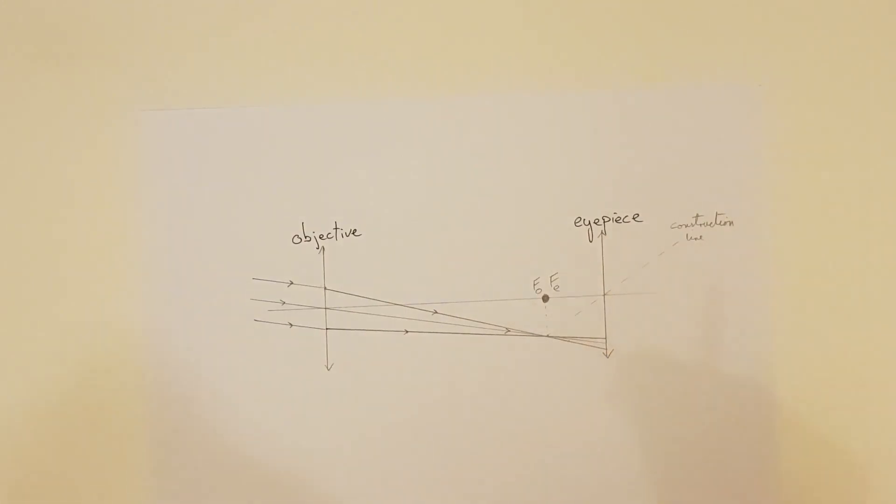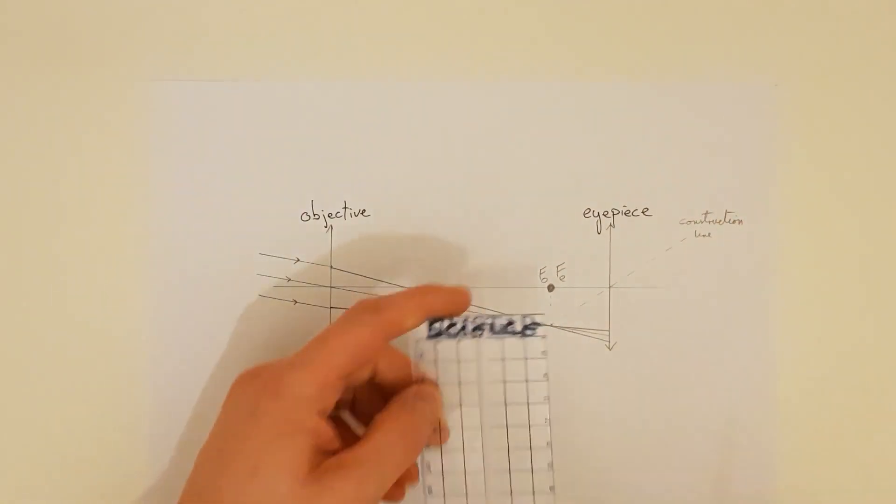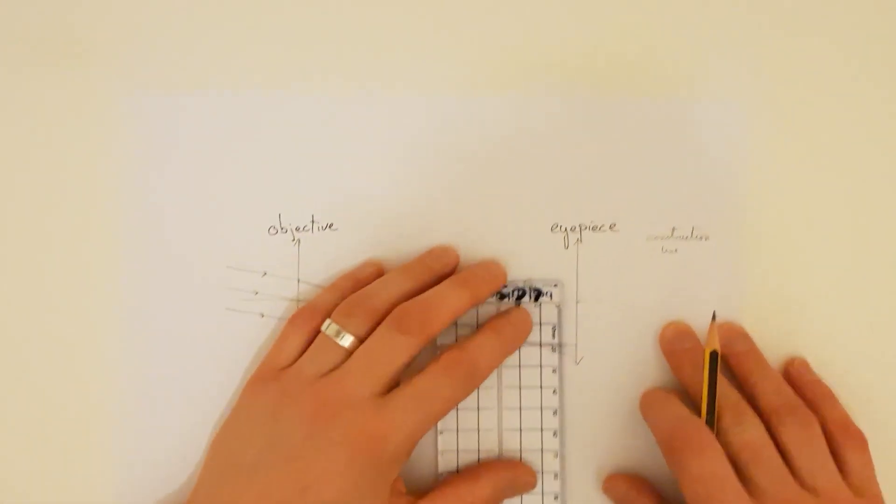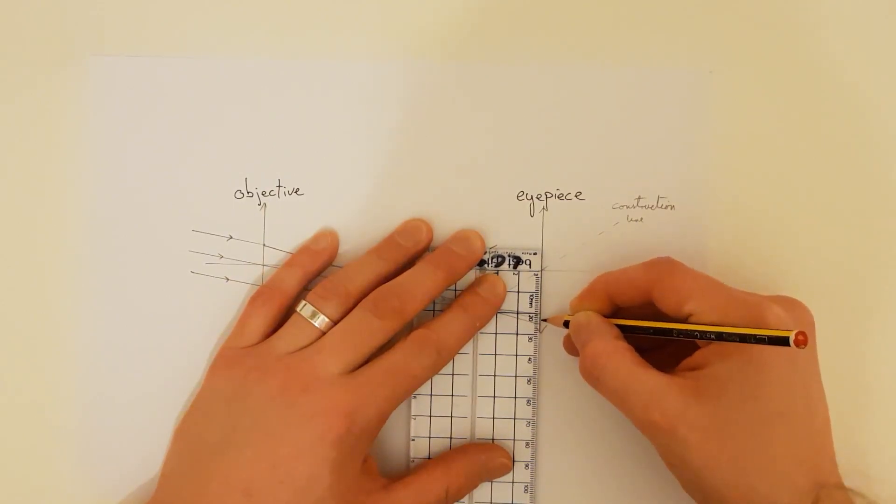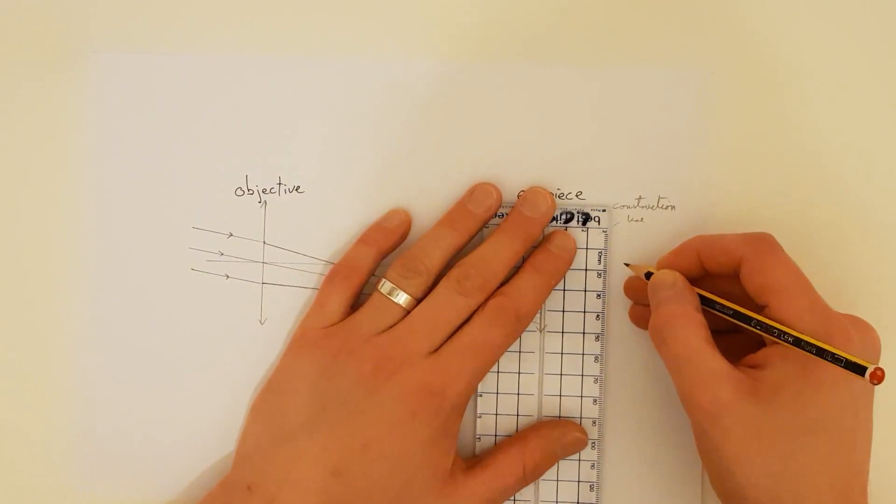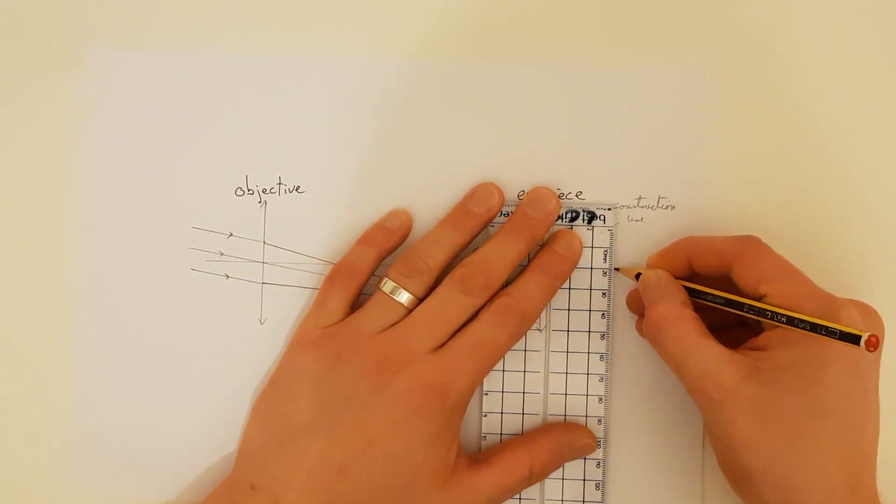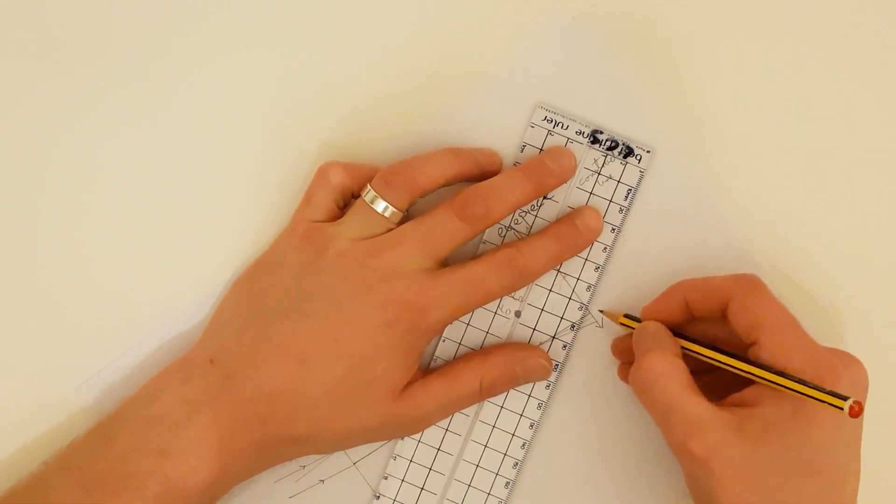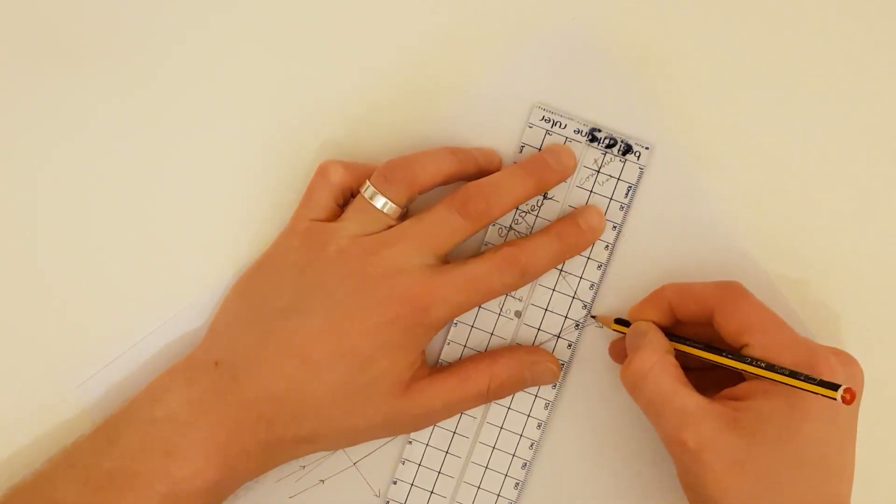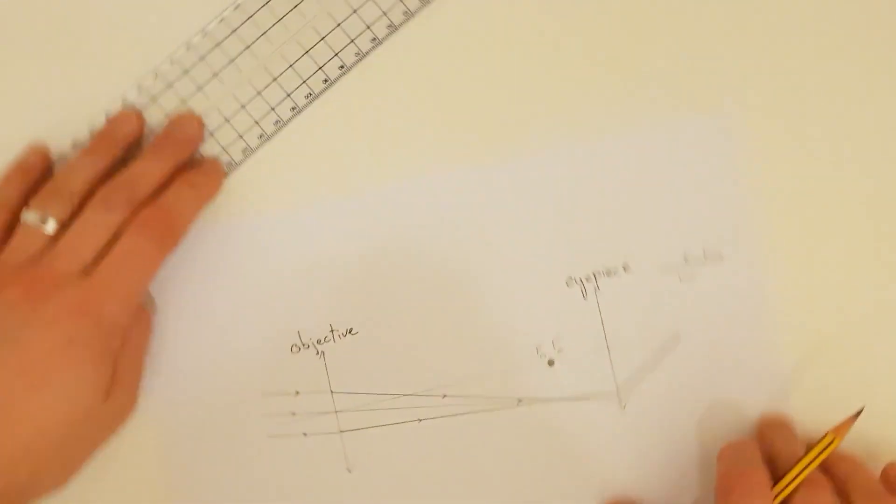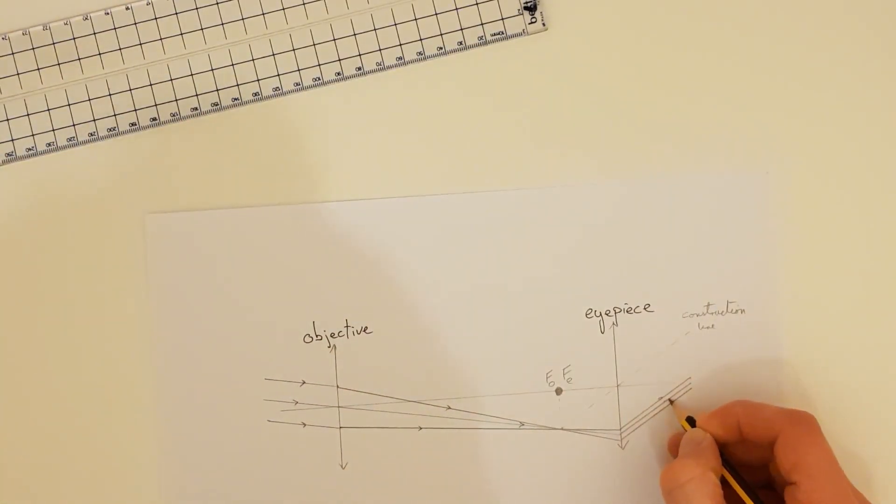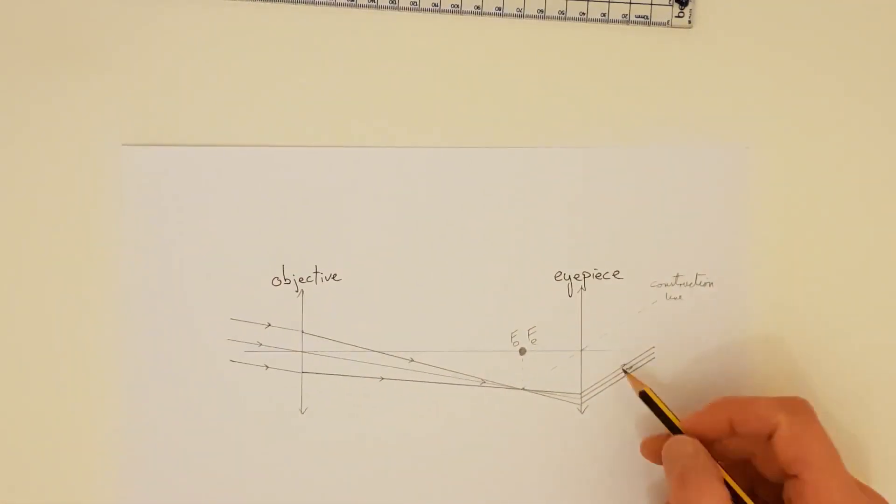Because this telescope is in normal adjustment these three rays are going to emerge parallel to each other and also importantly parallel to this construction line that I drew earlier. So I'm going to get my ruler out and I'm going to measure how far they are from the construction line and this is two, two centimeters, 2.2 and 2.4 centimeters. I'm just going to make those same measurements over here. So I've got two centimeters, 2.2 centimeters and 2.4 centimeters. So I've got my three parallel rays emerging and again because they have changed direction through that lens I'm just going to draw an arrowhead on this.